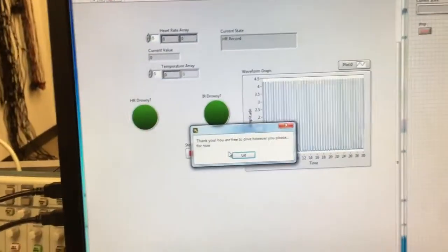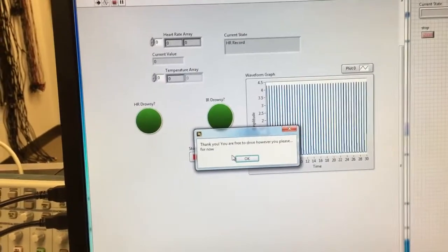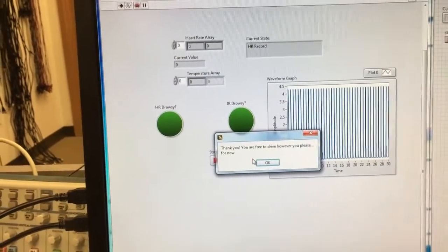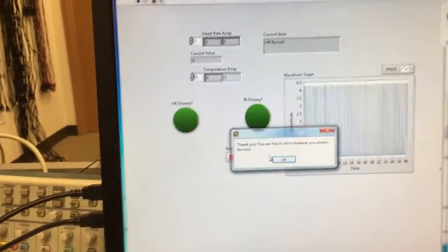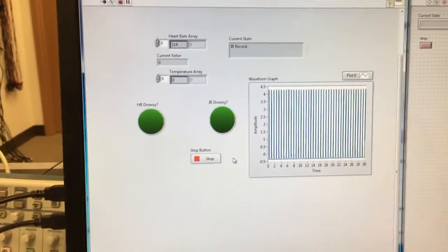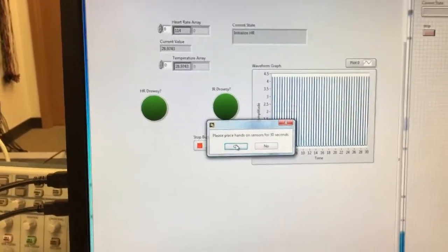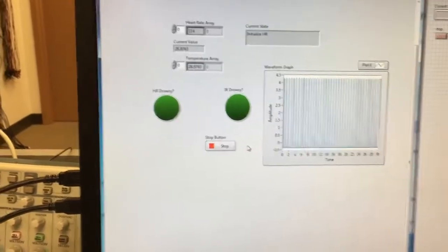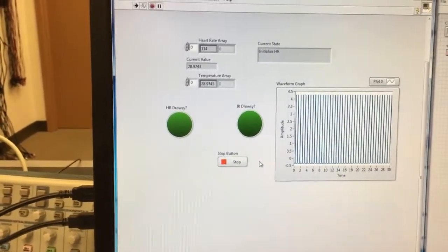As we can see here the program is now telling us we can remove our hands from the heart rate sensor and drive how we please. For this demonstration we will not put our hands back on the heart rate sensor to show that there is a major change in heart rate and to signify that the driver is drowsy.